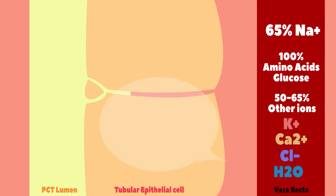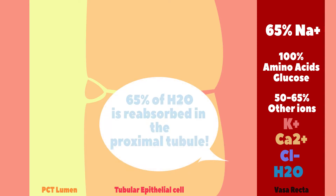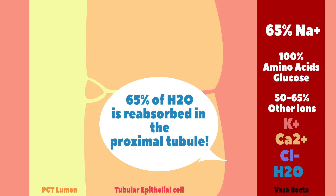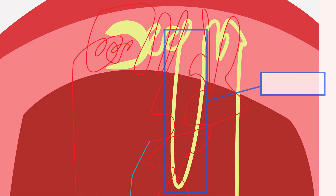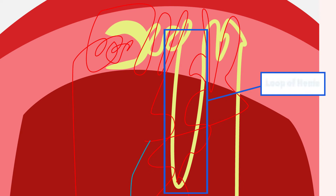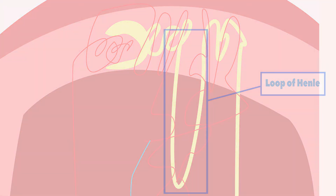Overall, approximately 65% of all water that initially left the blood in the glomerulus is reabsorbed in the proximal tubule. Following the proximal tubule, the ultrafiltrate flows into the loop of Henle, located in the medullary layer of the kidneys. Although lower in volume, the concentration of the ultrafiltrate remains isotonic to blood, approximately 300 milliosmoles.